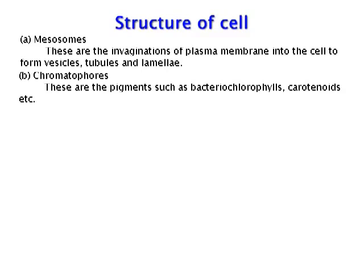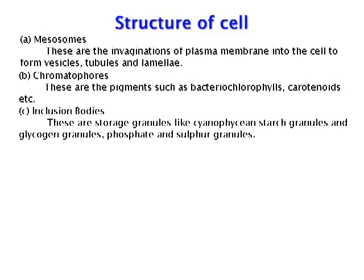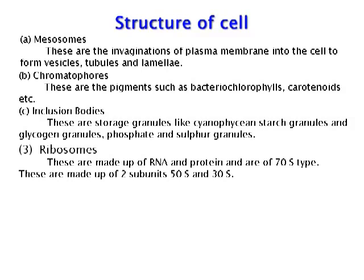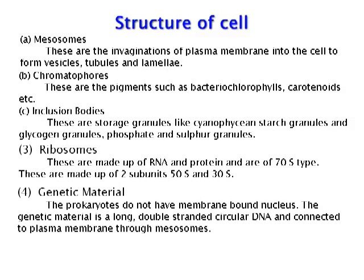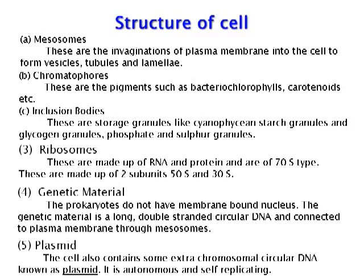Chromatophores are pigments such as bacteriochlorophylls, carotenoids, etc. Inclusion bodies are storage granules like cyanophycin, starch granules, glycogen granules, phosphate, and sulfur granules. Ribosomes are made up of RNA and protein and are of the 70S type, consisting of two subunits: 50S and 30S. The prokaryotes do not have a membrane-bound nucleus; the genetic material is a long double-stranded circular DNA connected to the plasma membrane through mesosomes. The cell also contains extra-chromosomal circular DNA known as a plasmid, which is autonomous and self-replicating.